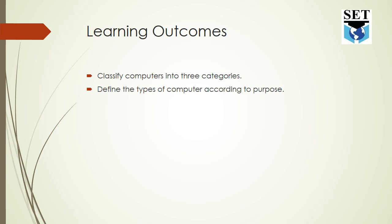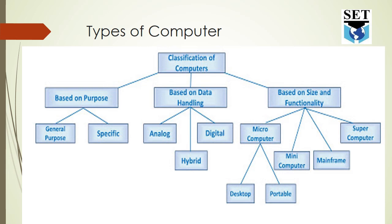The types of computers — computers are broadly categorized into three types: based on purpose, based on data handling, and based on size, processing speed, or functionality.